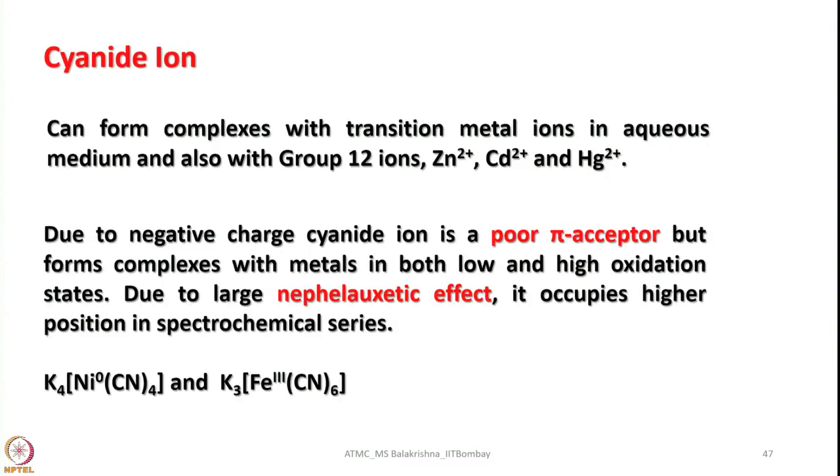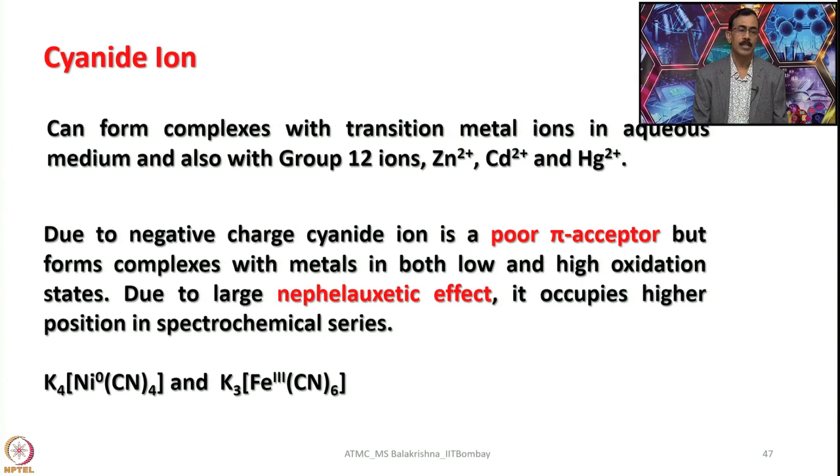Now look into another important ligand among carbon donor ligands that is cyanide ion can form complexes with the transition metal ions in aqueous medium and also with group 12 ions. Group 12 ions means zinc, cadmium and mercury they have completely filled electronic configuration that means Nd10, N plus 1, S2 and nevertheless it can also form complexes with these metal ions also. Due to negative charge cyanide ion is a poor pi acceptor but forms complexes with metals in both low and high oxidation states. Due to large nepheloacetic effect it occupies higher position in spectrochemical series.